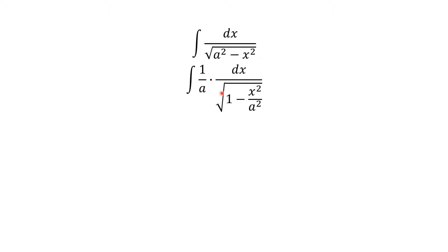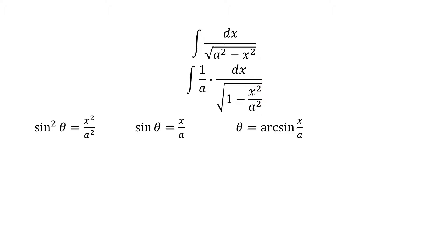We'll factor out an a squared from this radical, and that'll become one over the square root of a squared, which is one over a — so this constant will be here. Now we have it in the form square root of one minus something. If we set this equal to sine squared theta, we can employ our Pythagorean identities. It turns out that sine of theta equals x over a, so theta equals arcsine of x over a. We can also solve for x: x equals a sine theta. Then dx over dθ equals a cosine theta, so dx equals a cosine theta dθ.